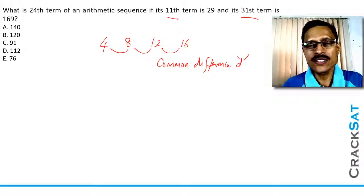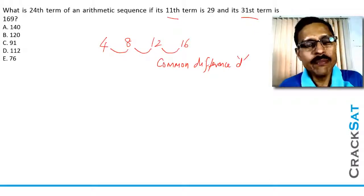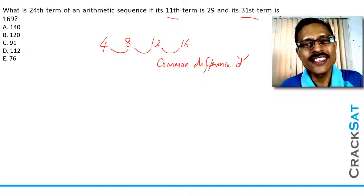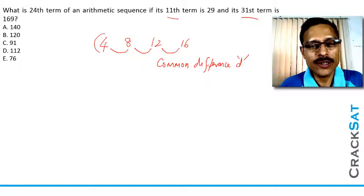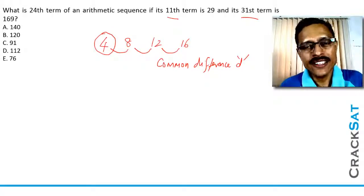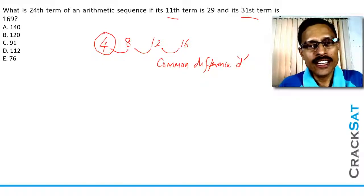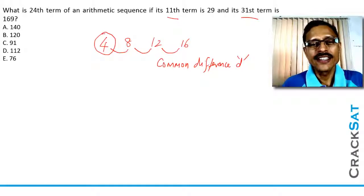So in an arithmetic sequence, D plays a crucial role. The entire sequence is defined based on what value D takes. There is one other thing to worry about, which is the first term of the sequence. Any arithmetic sequence is defined by what the value of the first term is and what the common difference is.